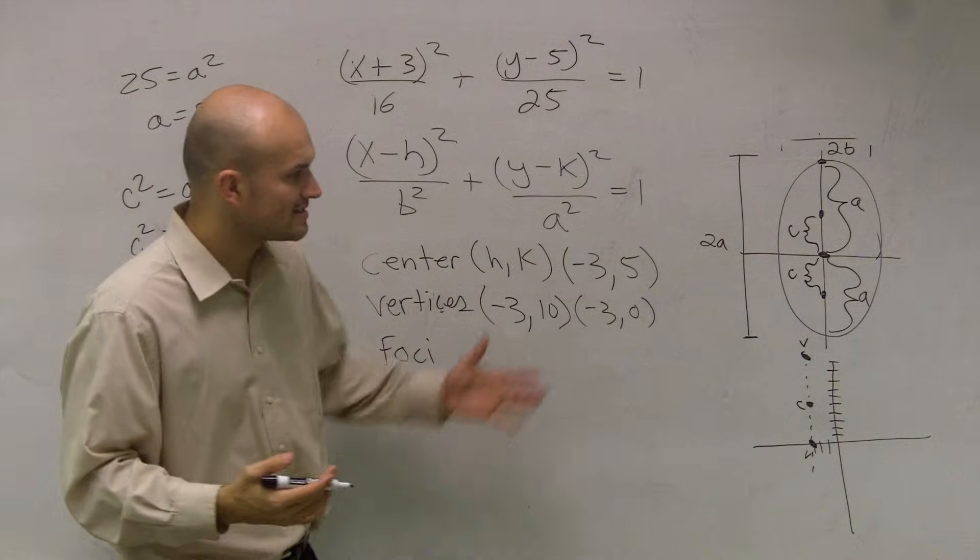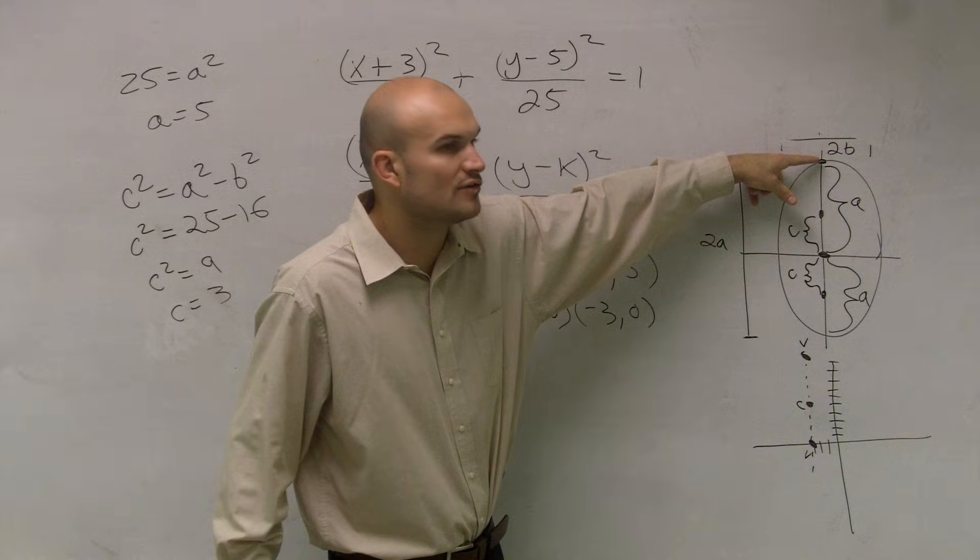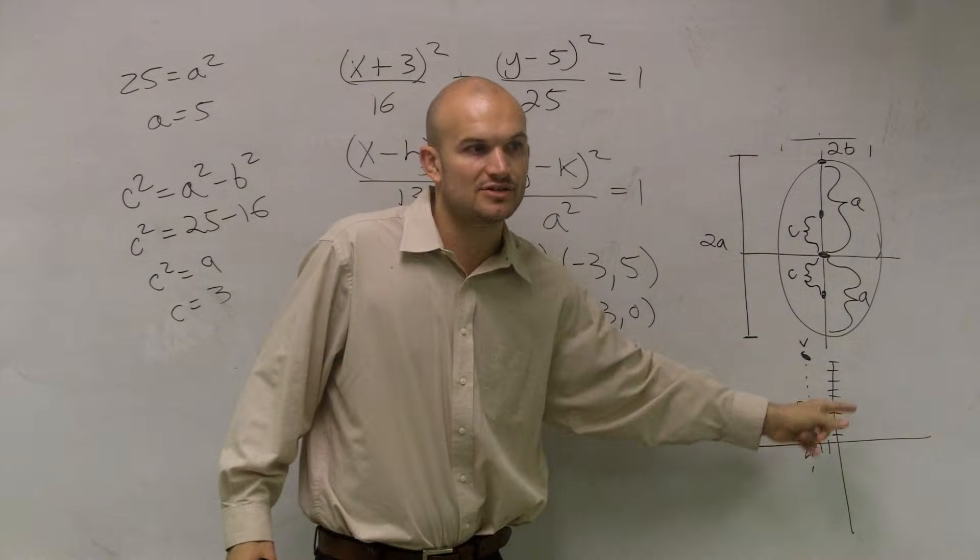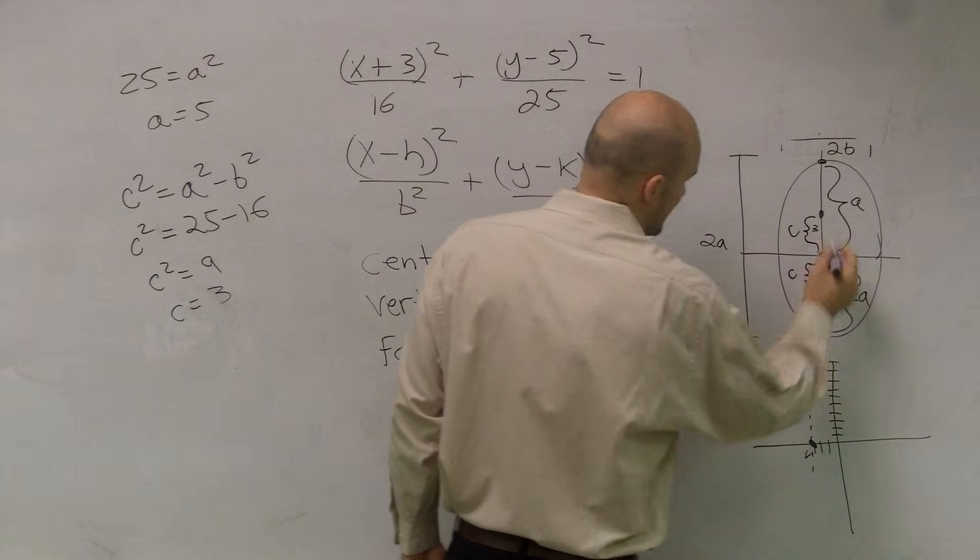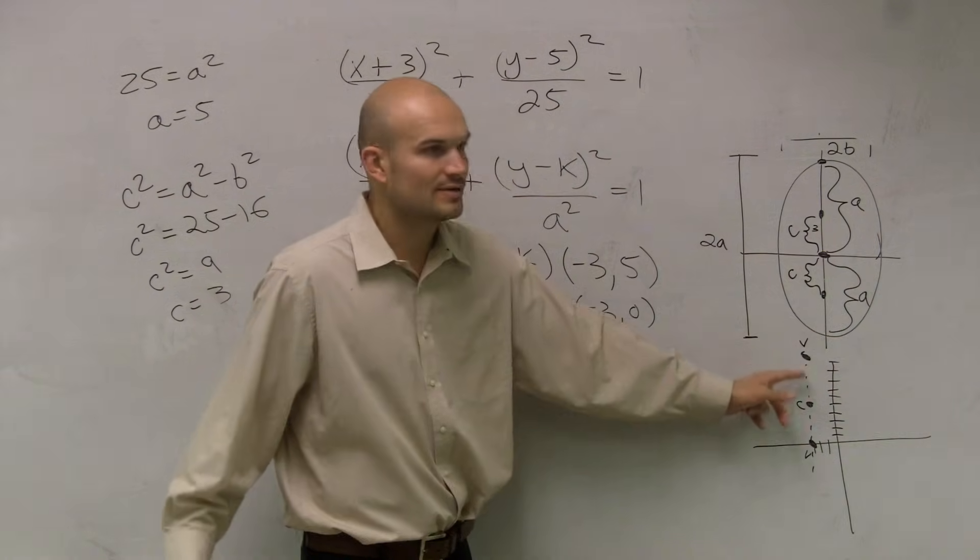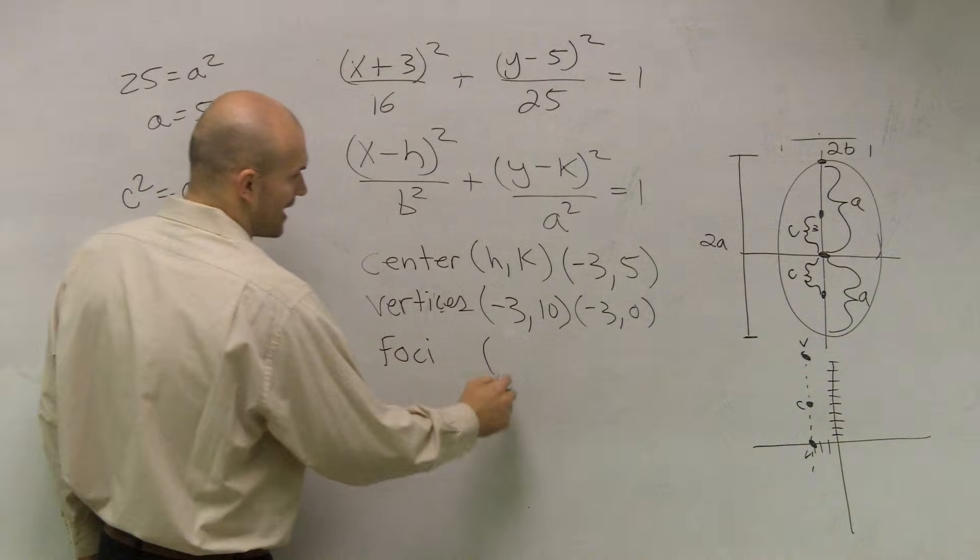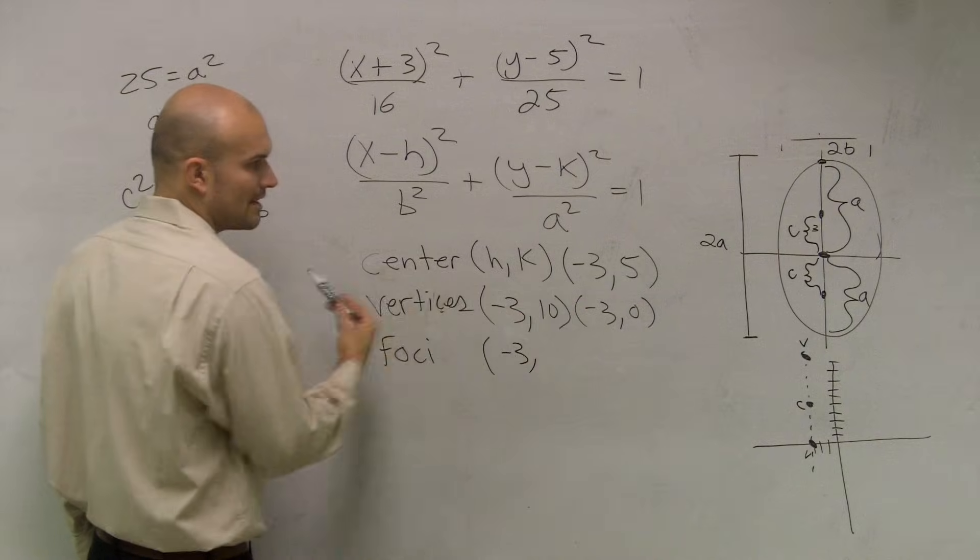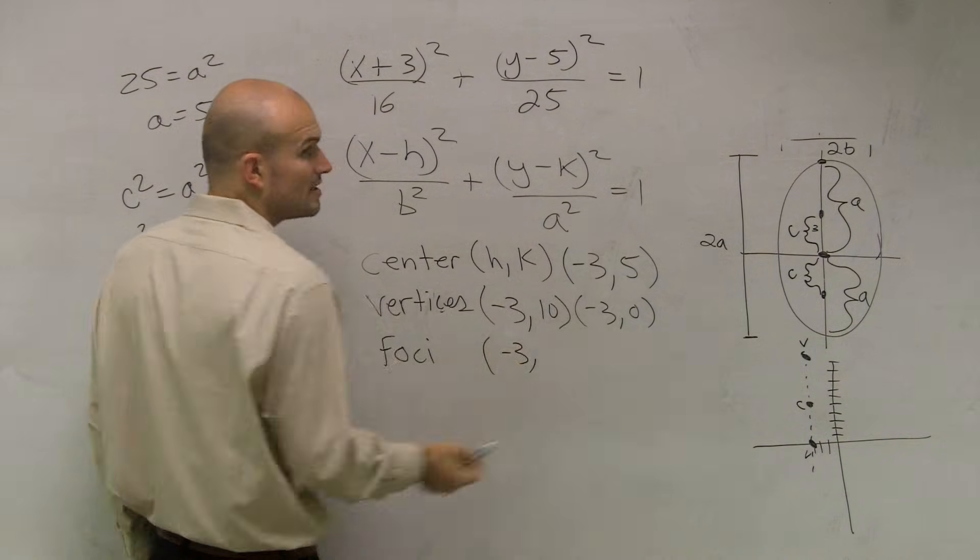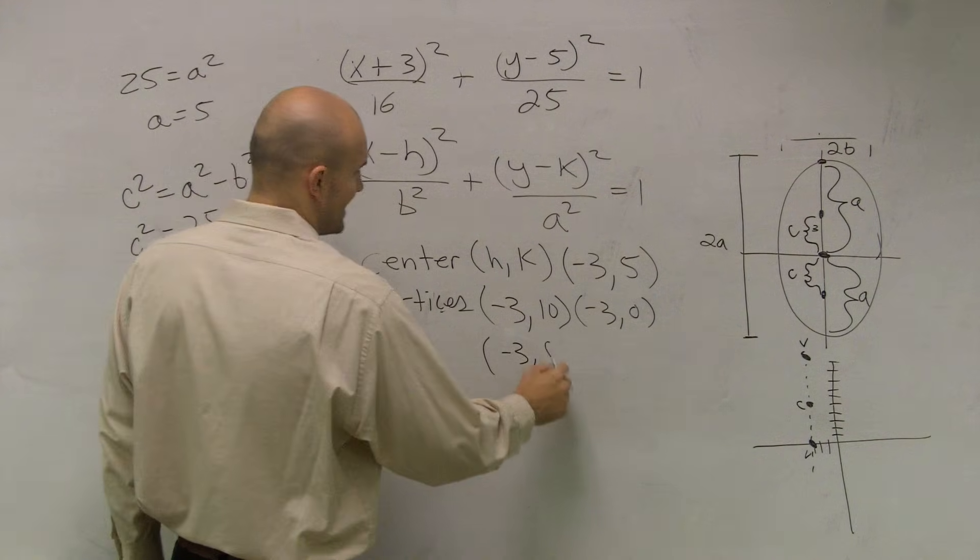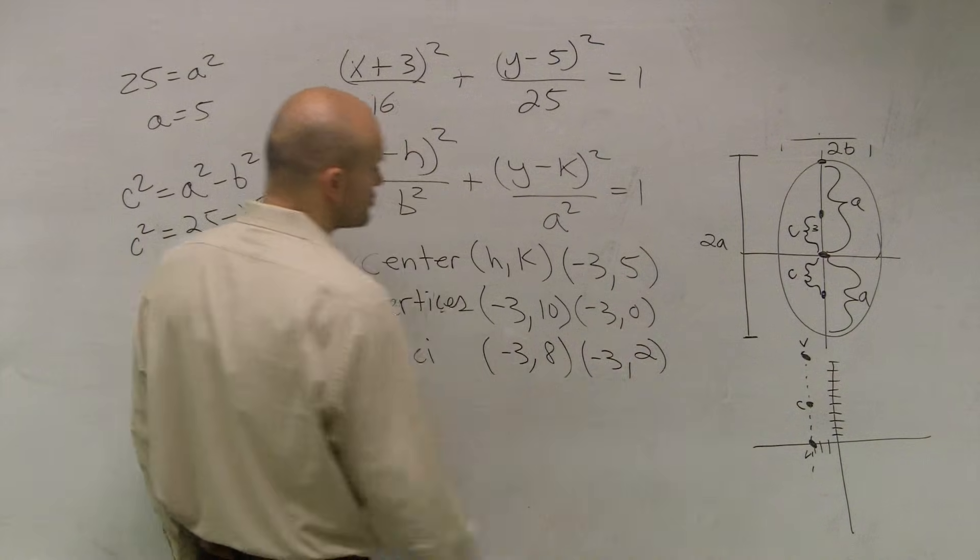So now our foci is going to be the exact same thing. Notice how our center, our foci, and our vertices all lie on the same major axis. So now, if I know that this distance is 3, all I'm going to do is add 3 and subtract 3 to the y coordinate of your center. So my foci is still going to be negative 3. I'm not moving left to right at all. But now it's going to be negative 3, 5 plus 3, which is 8, comma negative 3, 5 minus 3, which is 2.